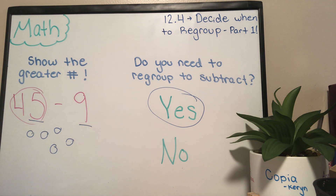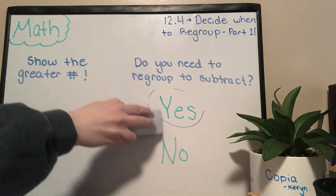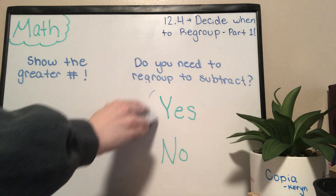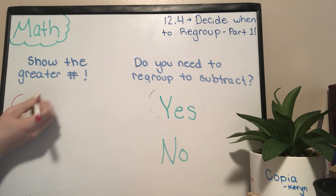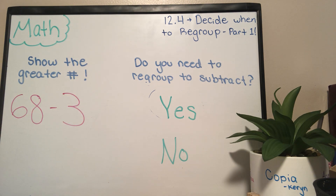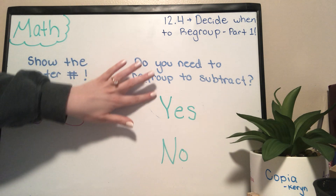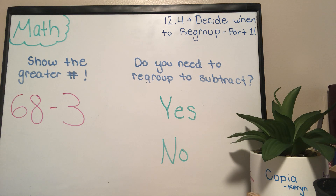Let's try the next one — number two on your practice book page, and this one is not done for you. Question number two has the subtraction problem 68 minus 3. Which number here is the bigger number? Is it going to be 68, or is our bigger number going to be 3? The bigger number is going to be 68, so you can go ahead and circle 68.